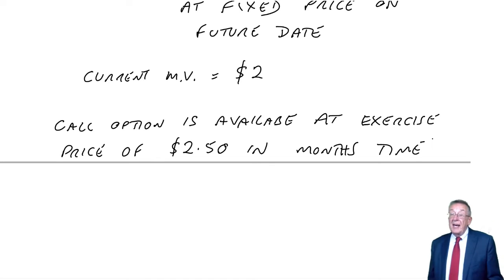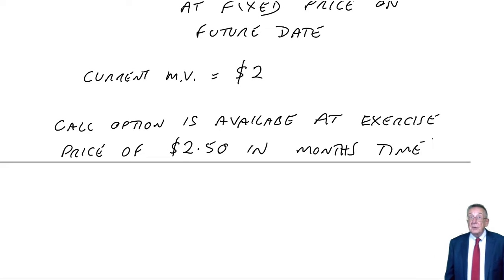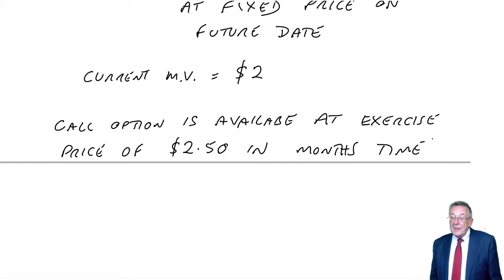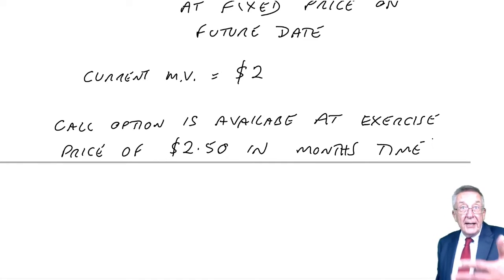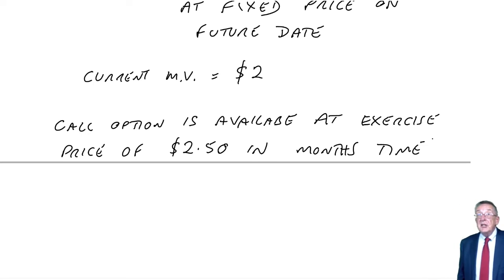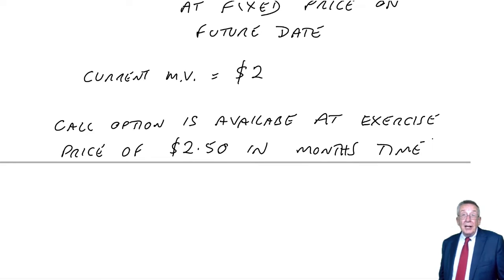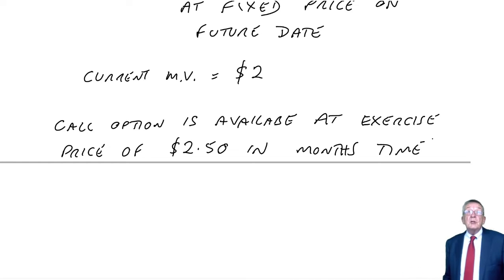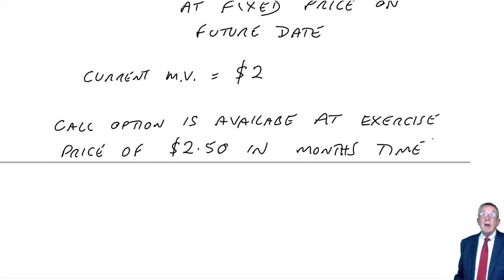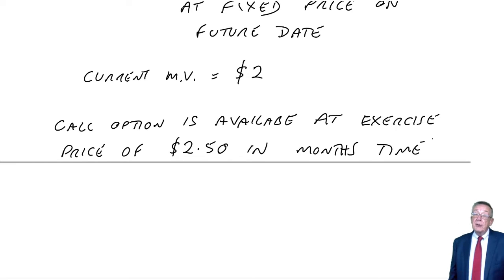If I have that option, it gives me the right in a month's time to buy shares at a fixed price of $2.50. If the share price has gone up to $4, I'll buy at $2.50 and sell at $4 for a profit. But if in a month's time the share price has gone down to $1, I won't use the option — I'd just buy them at $1 instead. It's the right to buy shares at a fixed price on a future date.